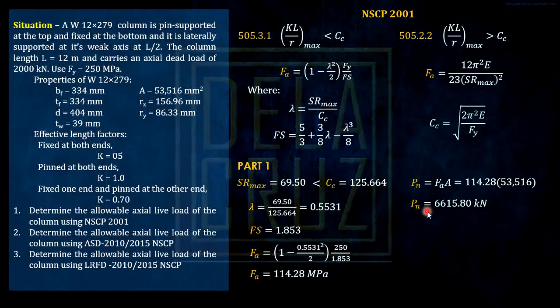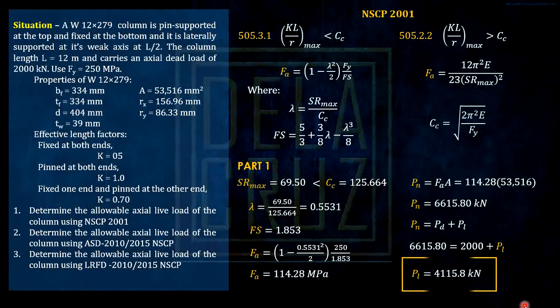Take note, we're looking for the axial live load. Here in NSCP 2001, there are no factors given. So directly, the Pn equals the dead load plus live load. Substitute. We have the dead load here, 2000 kN, plus live load. And finally, this is the live load. That is the answer for part one, NSCP 2001.